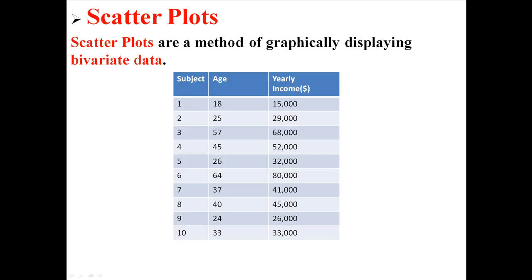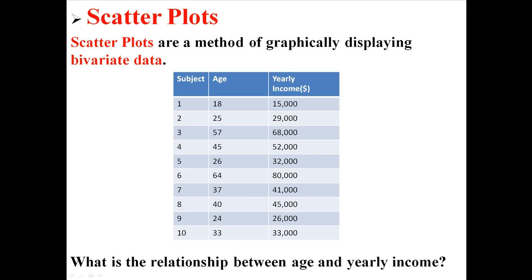Here's an example of some bivariate data. We have 10 subjects and we collected information from them — their age and their yearly income. So I can ask you, what is the relationship between age and yearly income? Maybe income goes up as people get older, or maybe it goes down, or maybe there's no relationship between the two things at all.